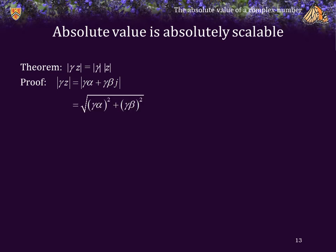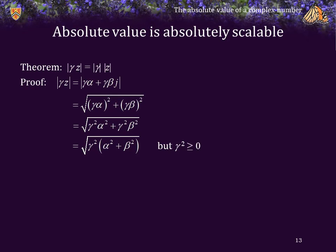Let's show this theorem. The absolute value of gamma times z is equal to the absolute value of the complex number on the right-hand side, which by definition is the square root of the sum of the squares of the real and imaginary components. Expanding that out and factoring out gamma squared — noting that the square root of x times y equals the square root of x times the square root of y when x is greater than or equal to 0, and gamma squared is greater than or equal to 0 — this equals the square root of gamma squared times the square root of alpha squared plus beta squared. The first term is the absolute value of gamma, and the second term is the absolute value of z. Thus, we are finished.